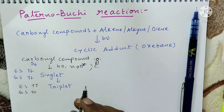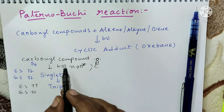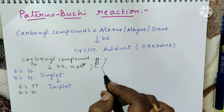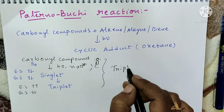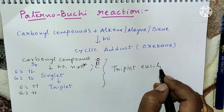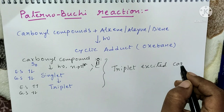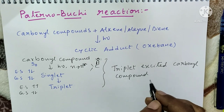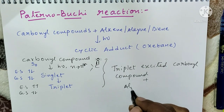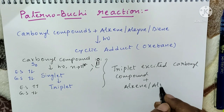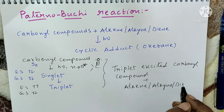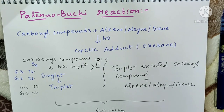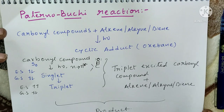So the triplet excited carbonyl compound, after completion of this process, is ready to attack with our alkene, alkyne, or diene, and then we get the product. This is the process by which the Paterno-Büchi reaction takes place.